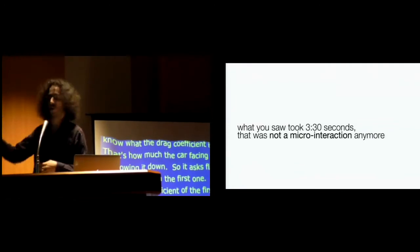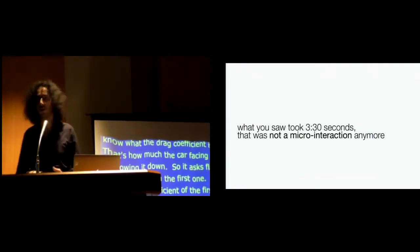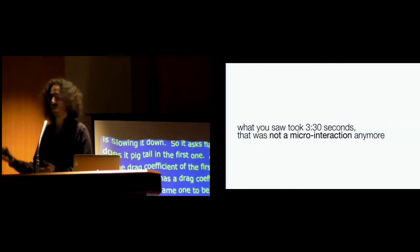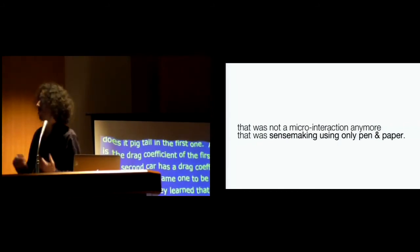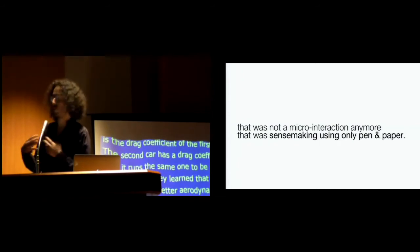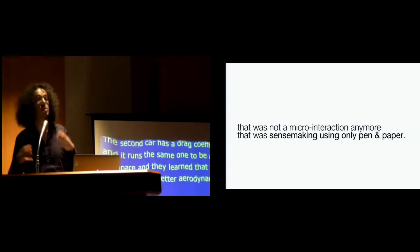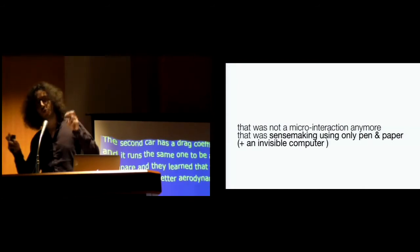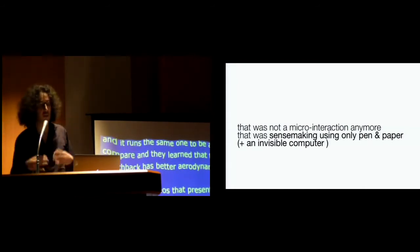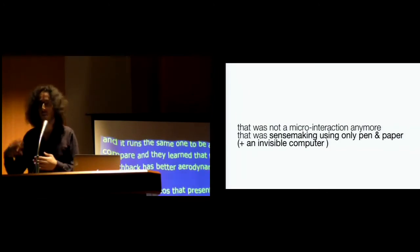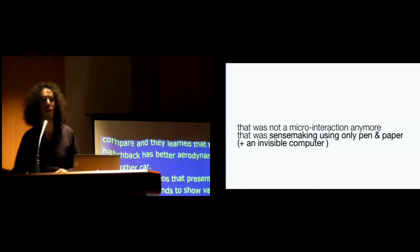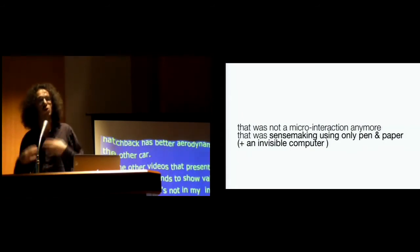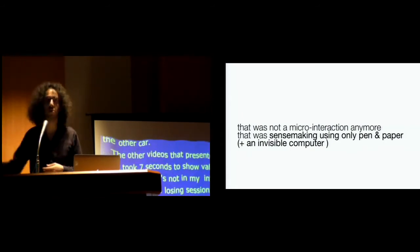Now they actually want to go a bit deeper and know what the drag coefficient is. That means how much the car's body is facing the wind is slowing it down. So it asks plot drag, does a pigtail on the first car and wants to know from zero to one what's the drag coefficient of the first car. And it turns out that the sedan car has a drag coefficient over there. It reruns the same one to be able to compare and they learn that the hatchback has actually better aerodynamics than the sedan car. So in what you just saw, unlike the other videos that I've presented here to you that took maybe seven seconds to show a value, this took three minutes and 30 seconds.